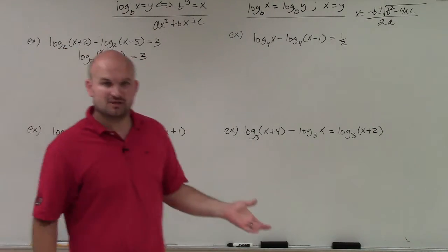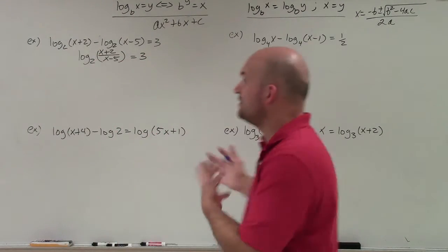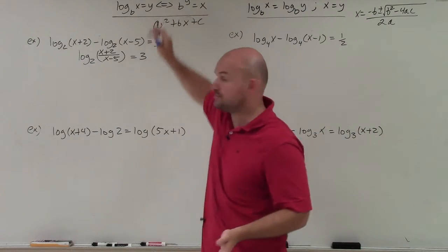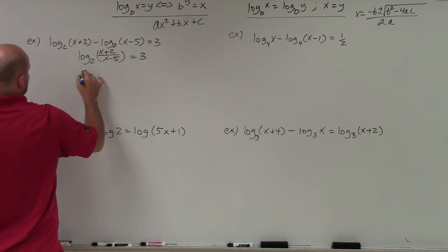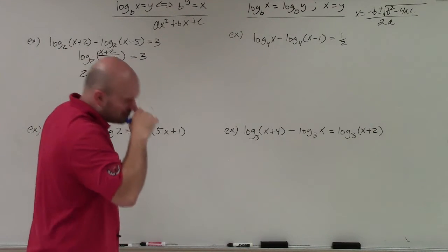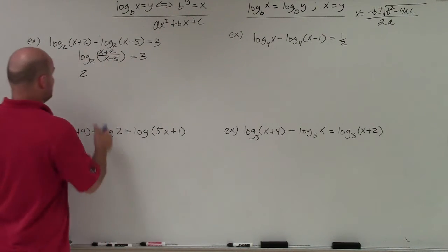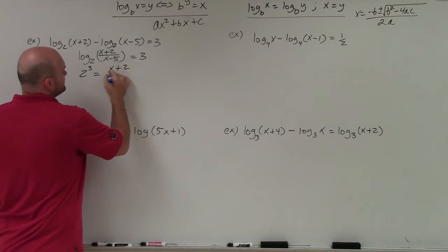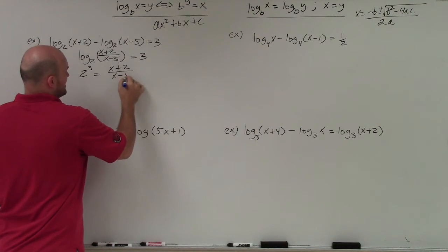So therefore, I have log base 2 of x plus 2 divided by x minus 5 equals 3. Now this might look pretty confusing here, but again, what we can do is now that we have a logarithm isolated, now we can rewrite it in exponential form. So that's going to look like, I have 2 cubed equals x plus 2 over x minus 5.